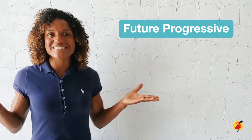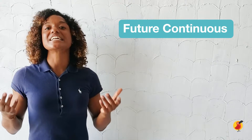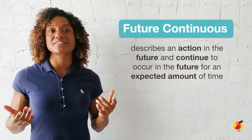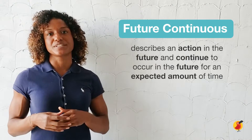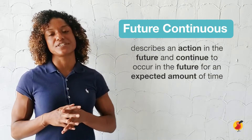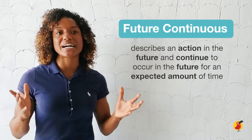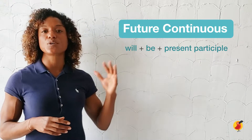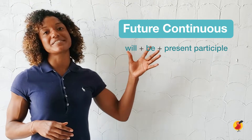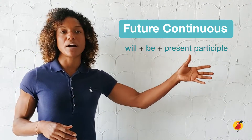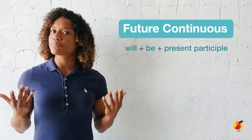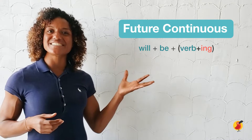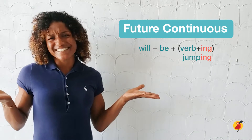What is the future continuous tense? It is a verb tense used when we want to talk about something that will occur in the future and continue to occur in the future for an expected amount of time. It is formed using the construction will plus be plus the present participle. The present participle is the root verb with the -ing ending, like jumping.